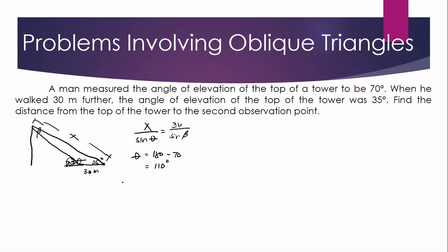Now, how do we get beta? Since our triangle is an oblique triangle, knowing that the sum of interior angles equals 180 degrees, we subtract the two known angles: 180 minus 35 minus 110, giving us beta equals 35 degrees. Now we have both theta and beta, so we can use our law of sines equation.